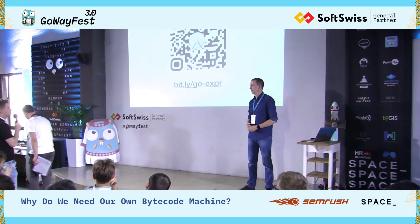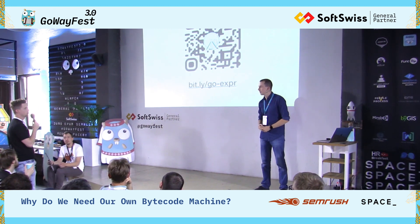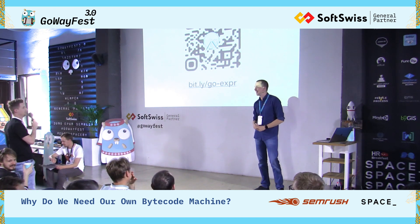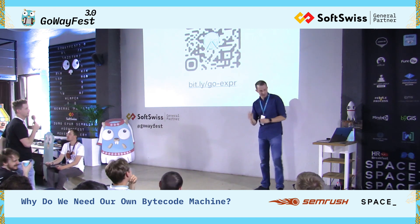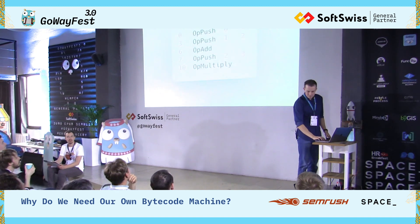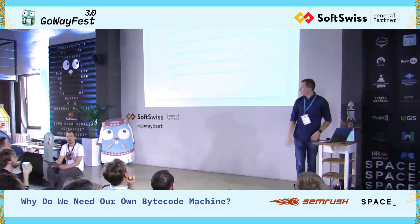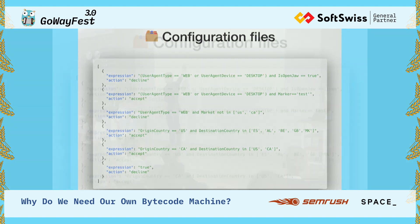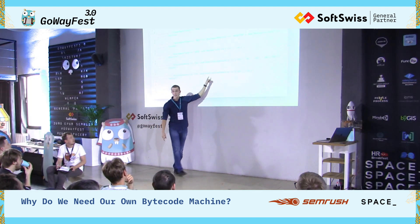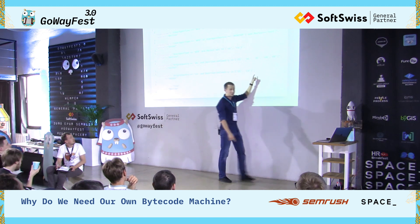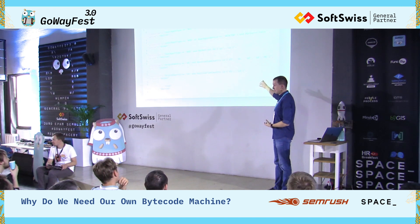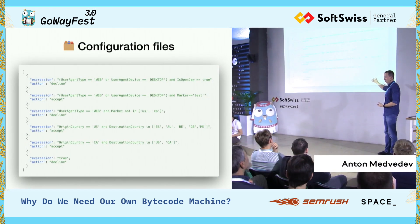This bytecode machine is really cool, but I'm not sure what to use it for — what problem does it solve? It's our configuration file. It contains some expressions written as code inside strings. In Go, we don't have an eval function — we cannot just put it in Go and evaluate it. We have to somehow transform it to code, or in our case, to bytecode.